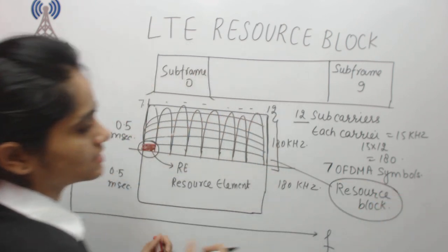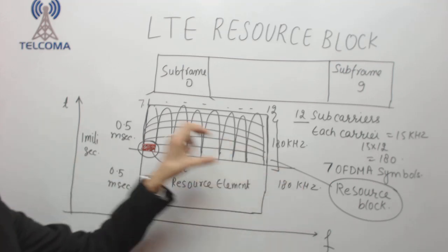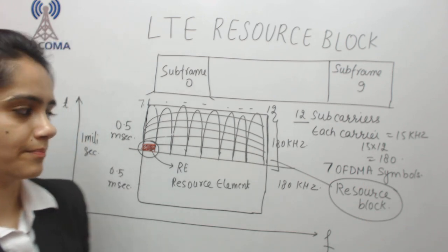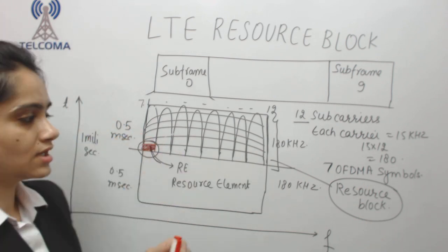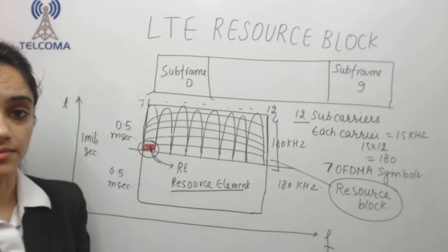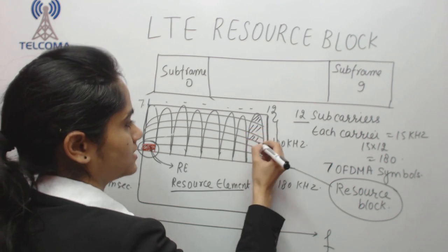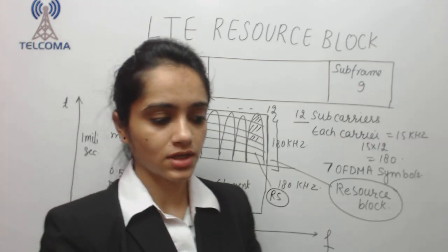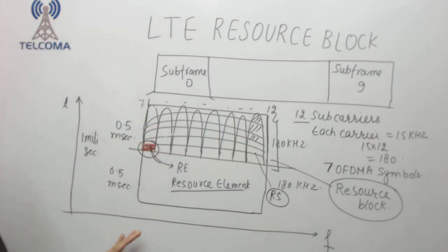A resource block is a unit of frequency and time. It carries our data, signaling, and everything else. Within the resource block, resource elements carry the actual content. Additionally, some resource elements are reserved as reference symbols for broadcasting purposes.